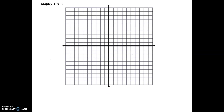So we graph y < 3x − 2. First, treat it as an equation. The y-intercept is −2, so plot a point there. The slope is 3, or 3/1, meaning up 3 and right 1. Since the inequality is strictly less than — no line underneath — we draw a dashed line. A tip: if the inequality symbol has a line underneath, draw a solid line; if it doesn't, dash it.